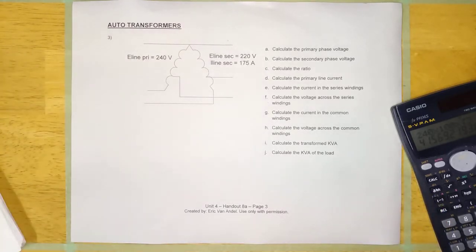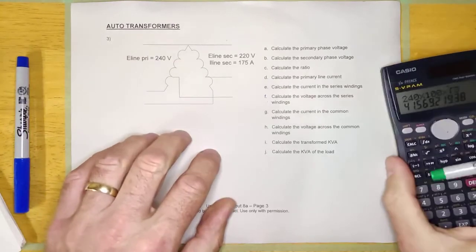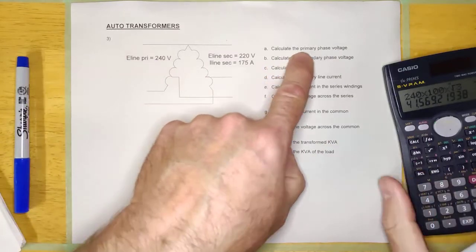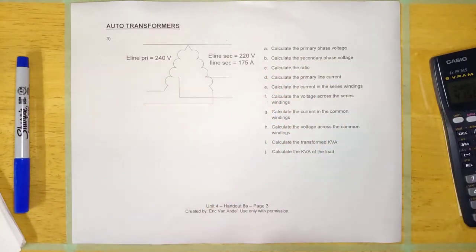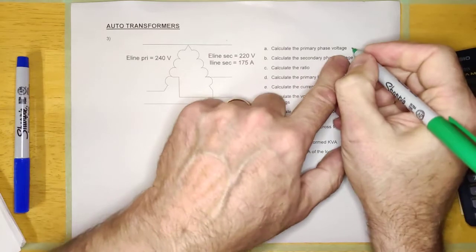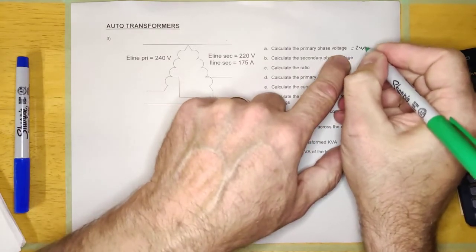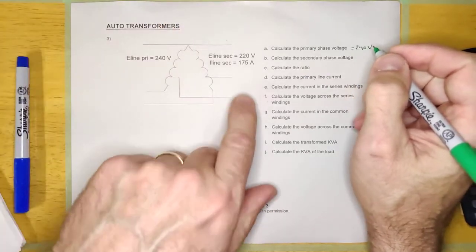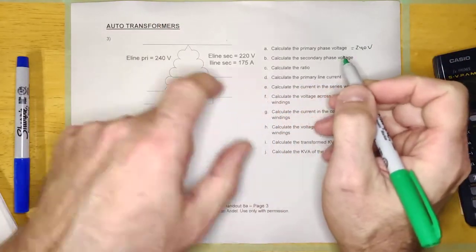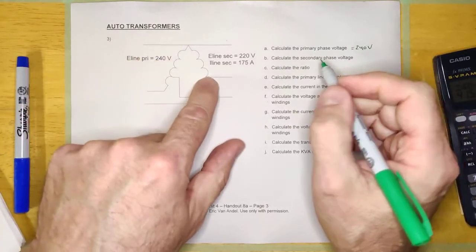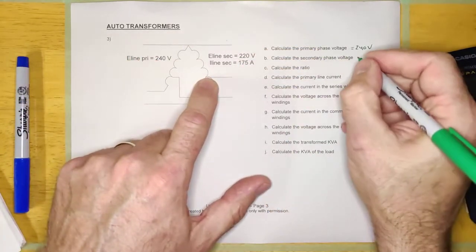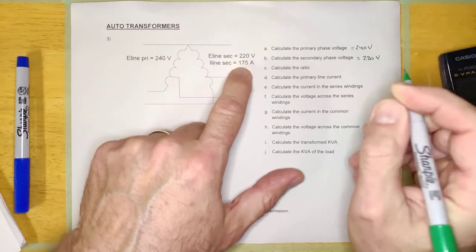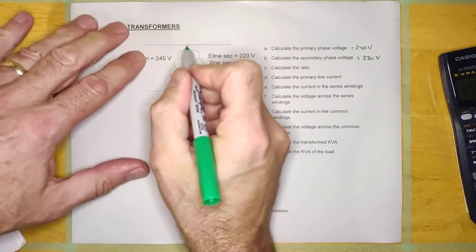It says here, look at E-line primary is 240 volts. Calculate the primary phase voltage. Well, this is a delta transformer, E-line equals E-phase, so this is simply 240 volts. If this is 240 from here to here, then it's going to be 240 from here to here. Calculate the secondary phase voltage. Well there it is, it's delta so it'll be the same as the line voltage, 220 volts.